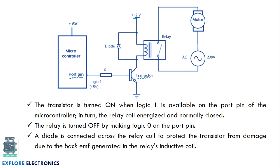When the port pin output of the microcontroller is set to logic 1, the transistor gets the required VBE voltage and turns on. Because the transistor is on and the external 12-volt supply is given to the relay, there will be current flow, generating a magnetic field. Because of the magnetic field, the relay makes the circuit close by attracting the armature towards the coil. Due to this closed circuit, the motor will be turned on.